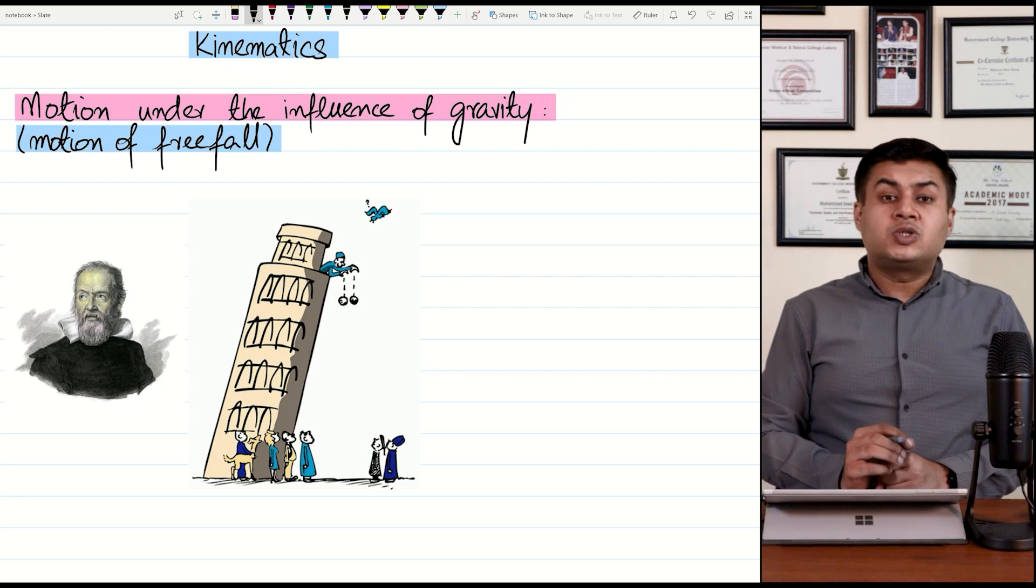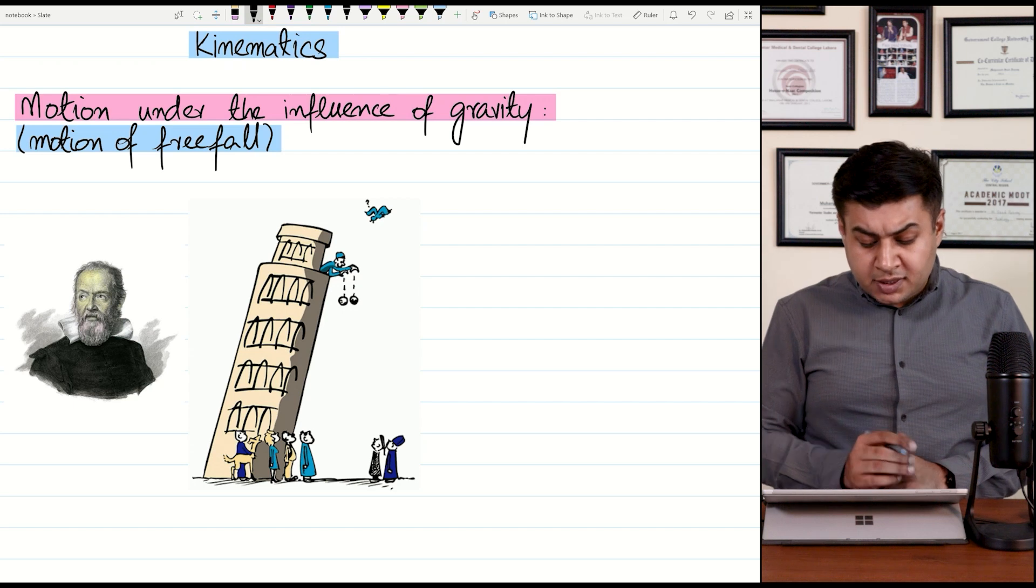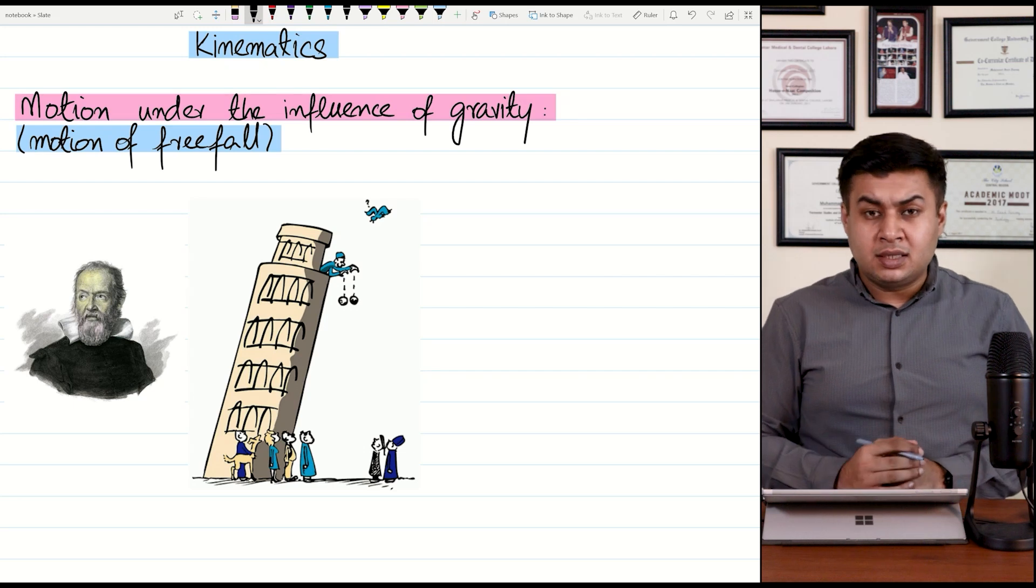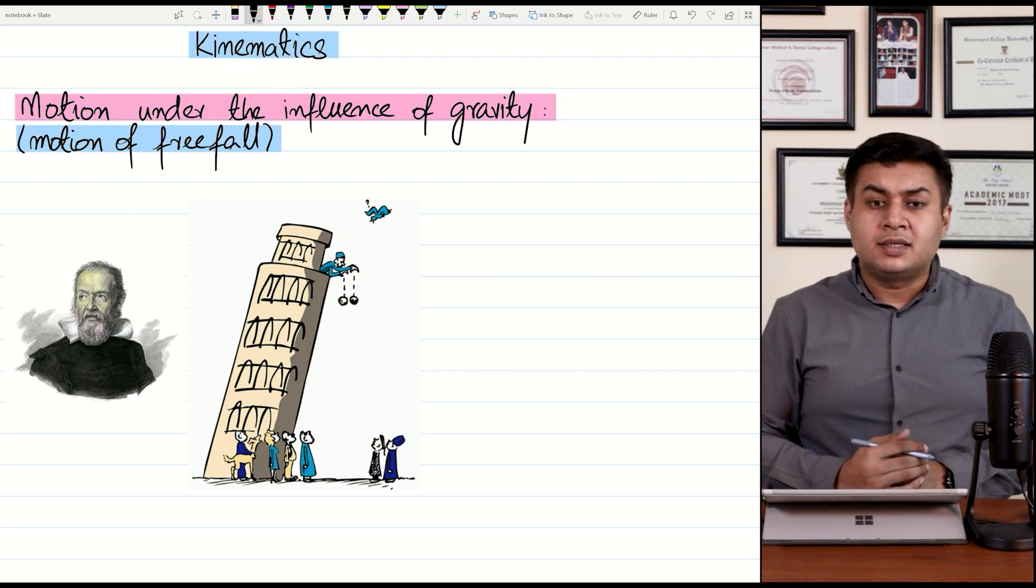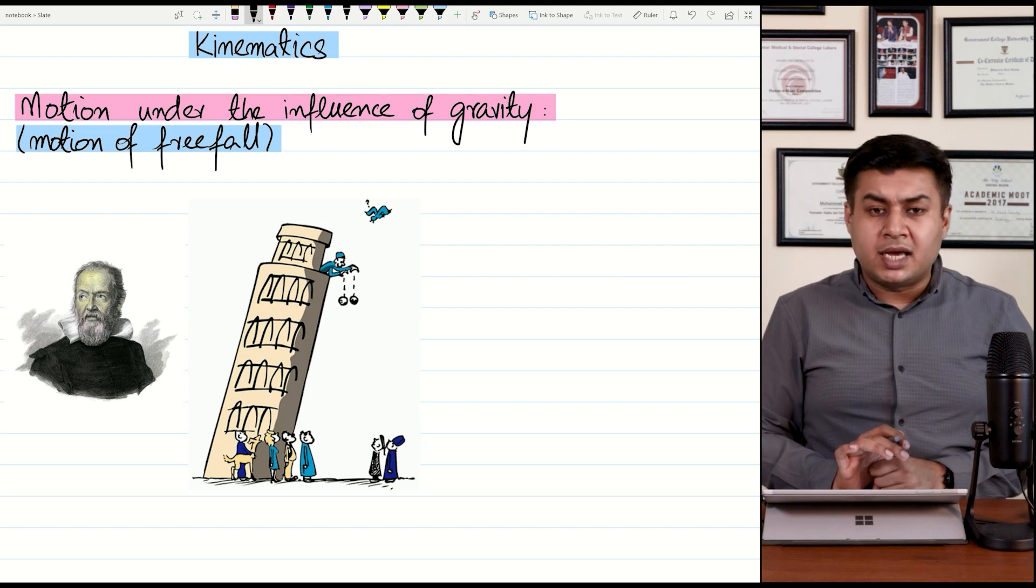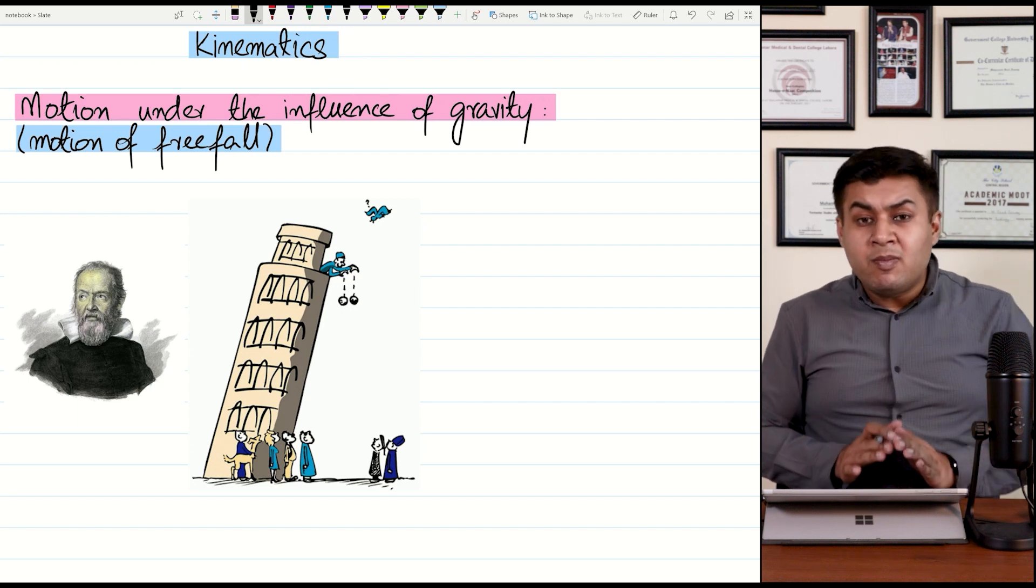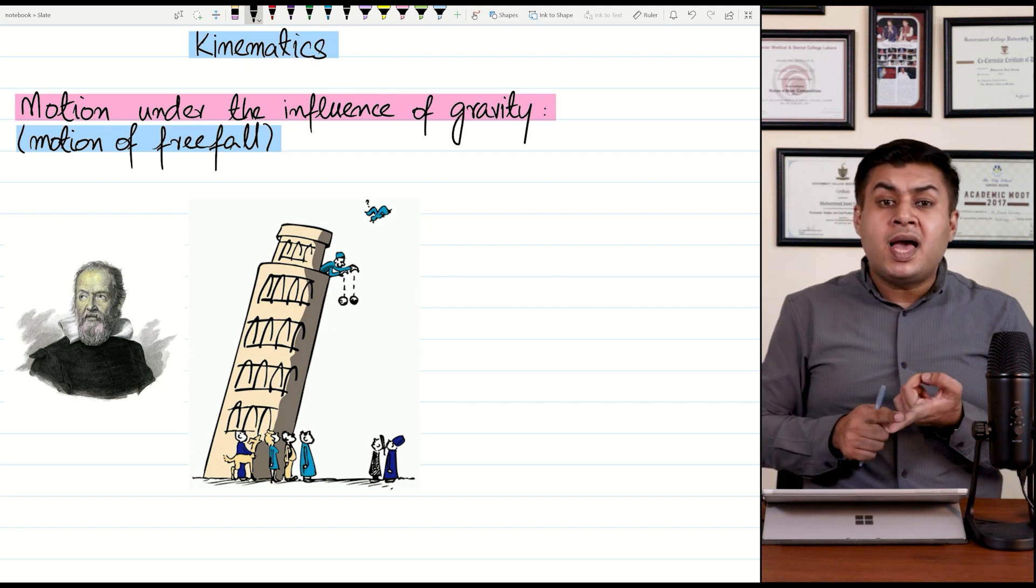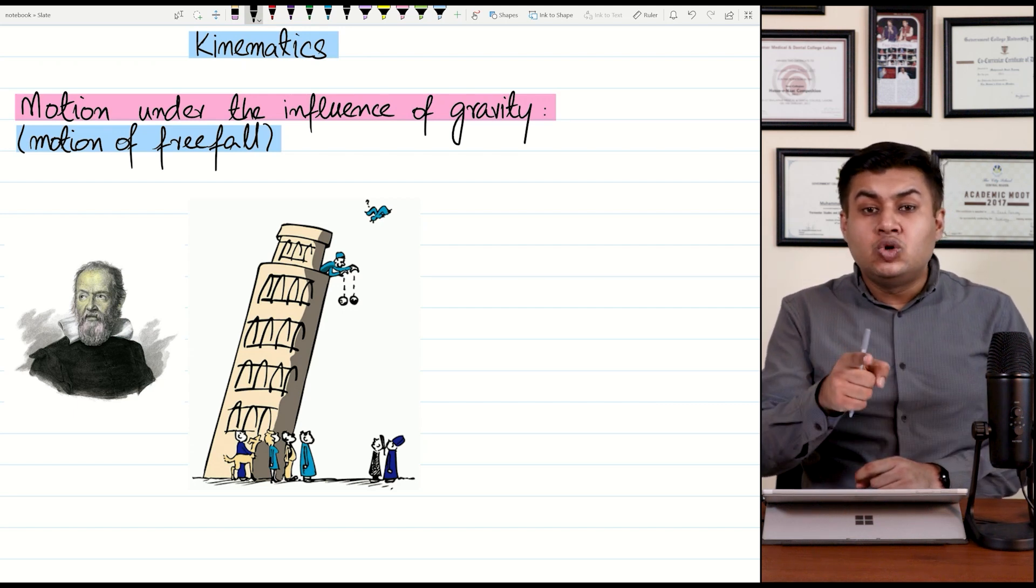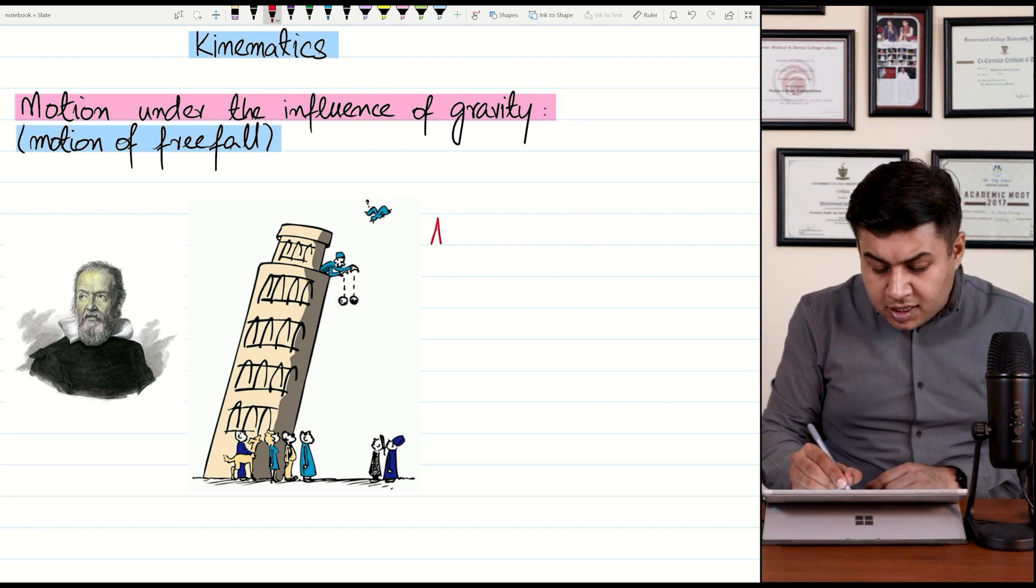So this concept was first communicated by Italian scientist Galileo. He went on the top of leaning tower of Pisa. As you can see in this diagram, he had a heavier stone and a lighter stone in his hand. So he dropped both of those stones together and it was observed that they reached the ground at almost the same time. It means that irrespective of masses, the objects have same falling time. So that's why they have same acceleration and that acceleration is referred as acceleration due to gravity.